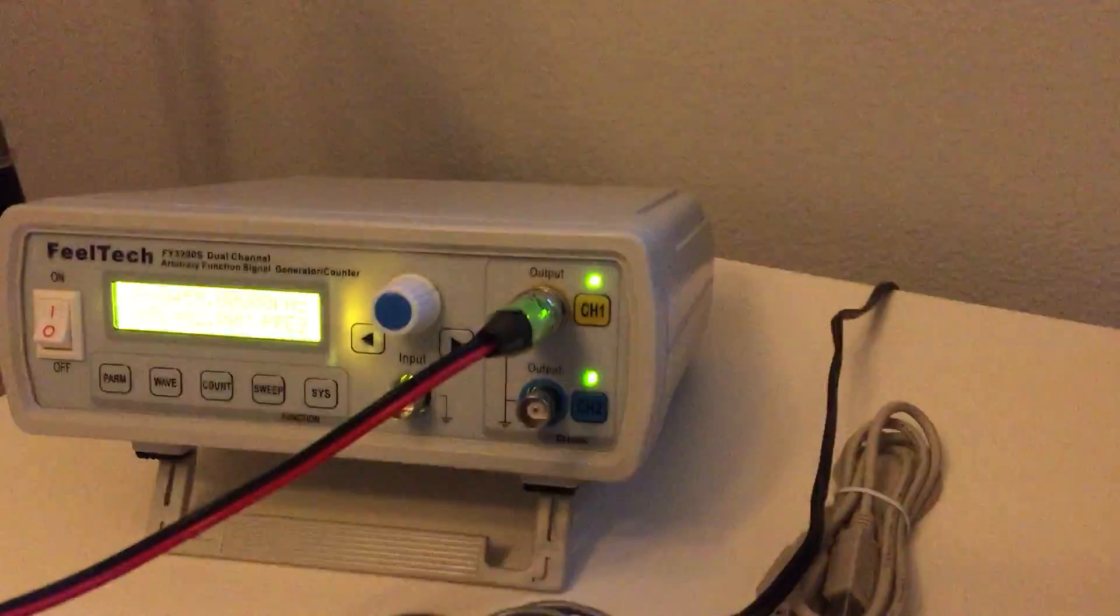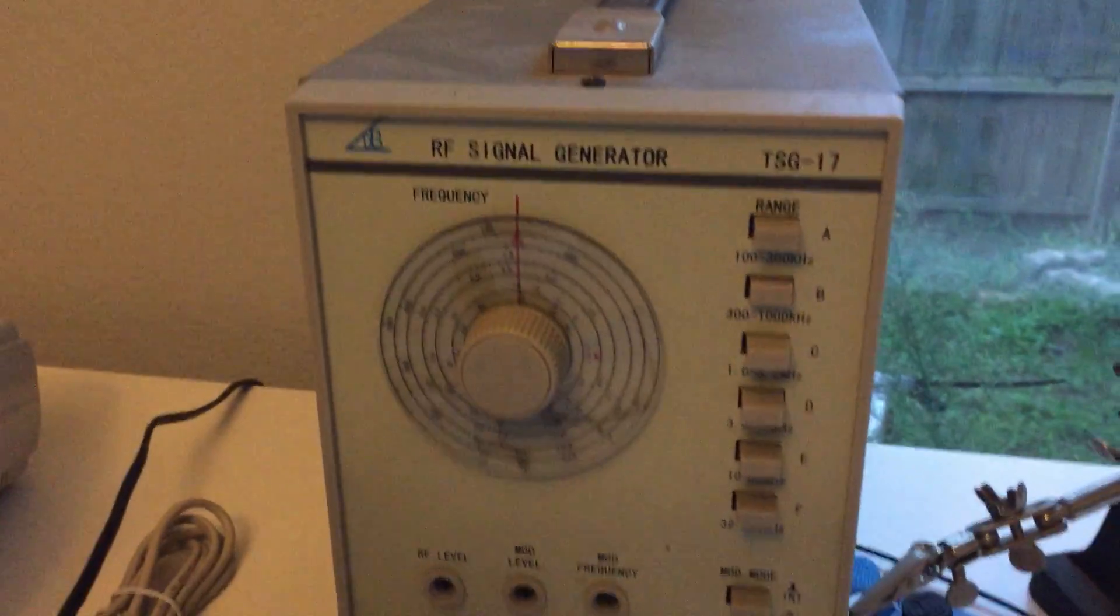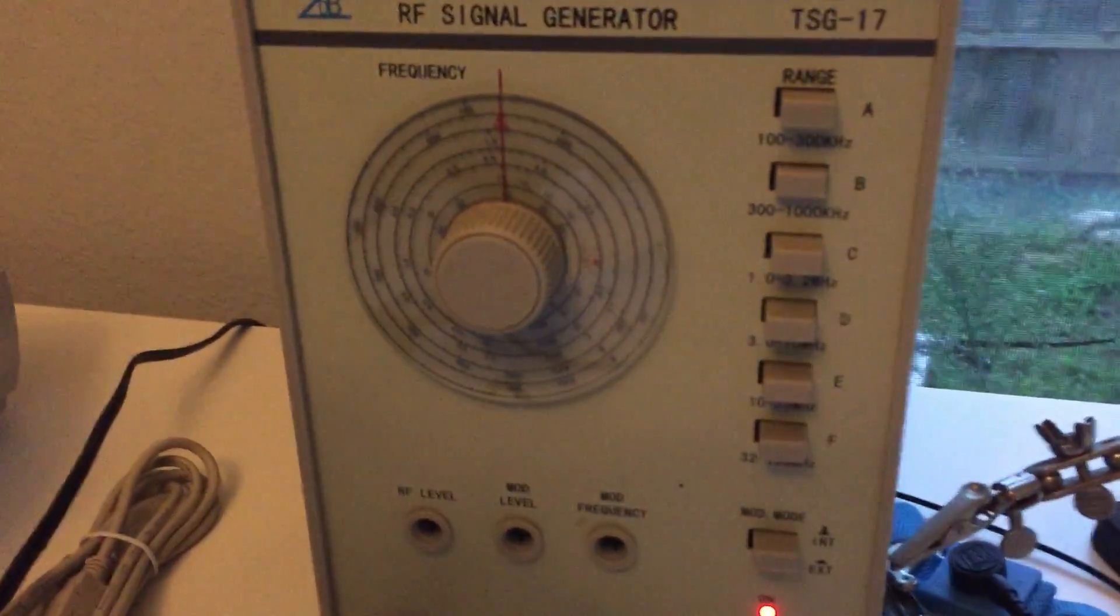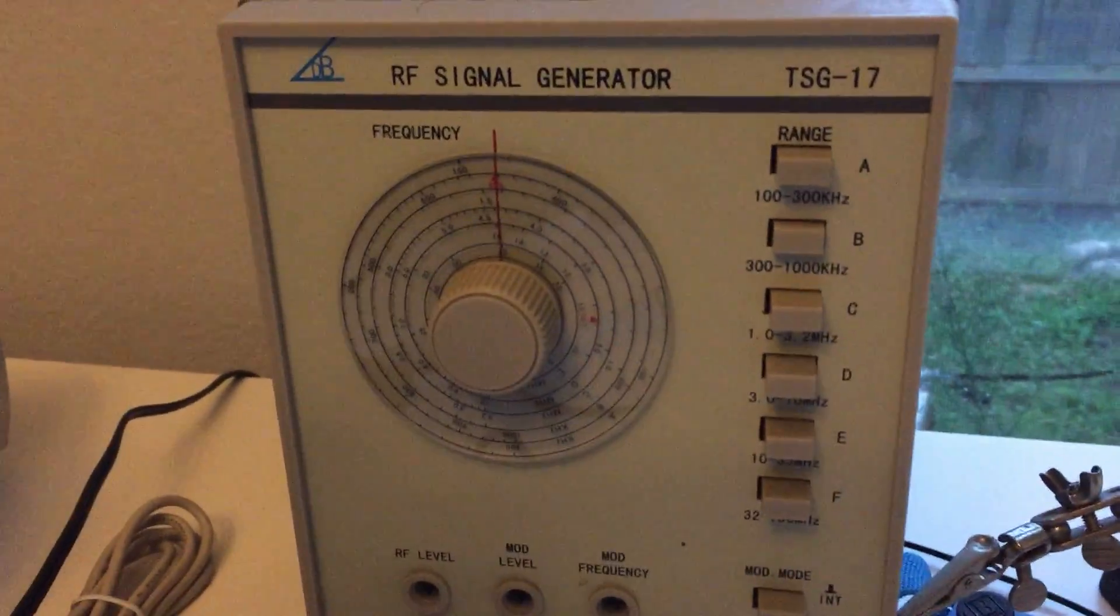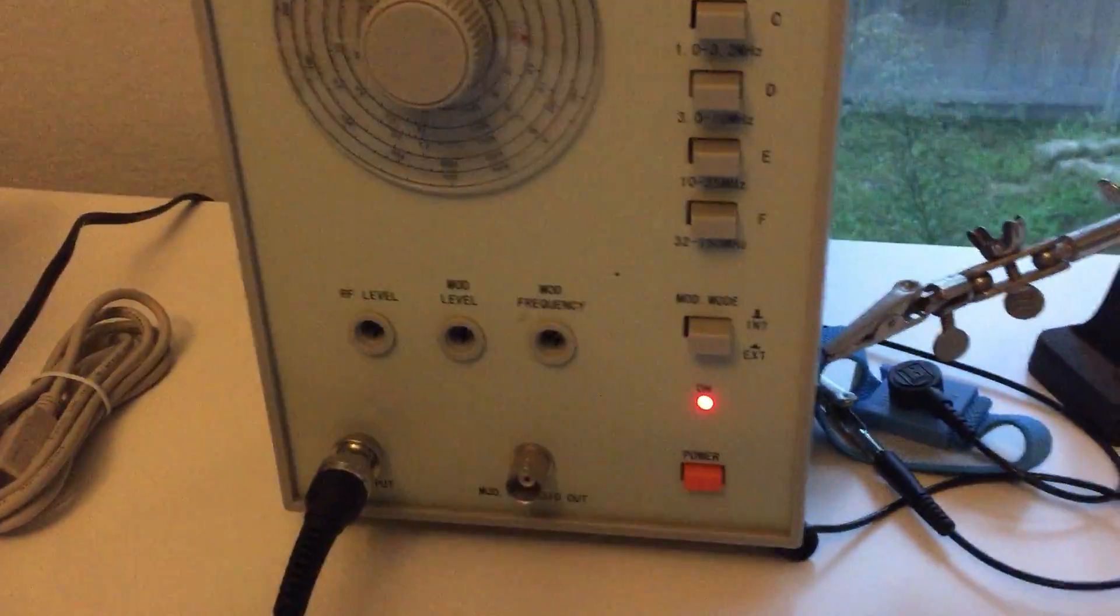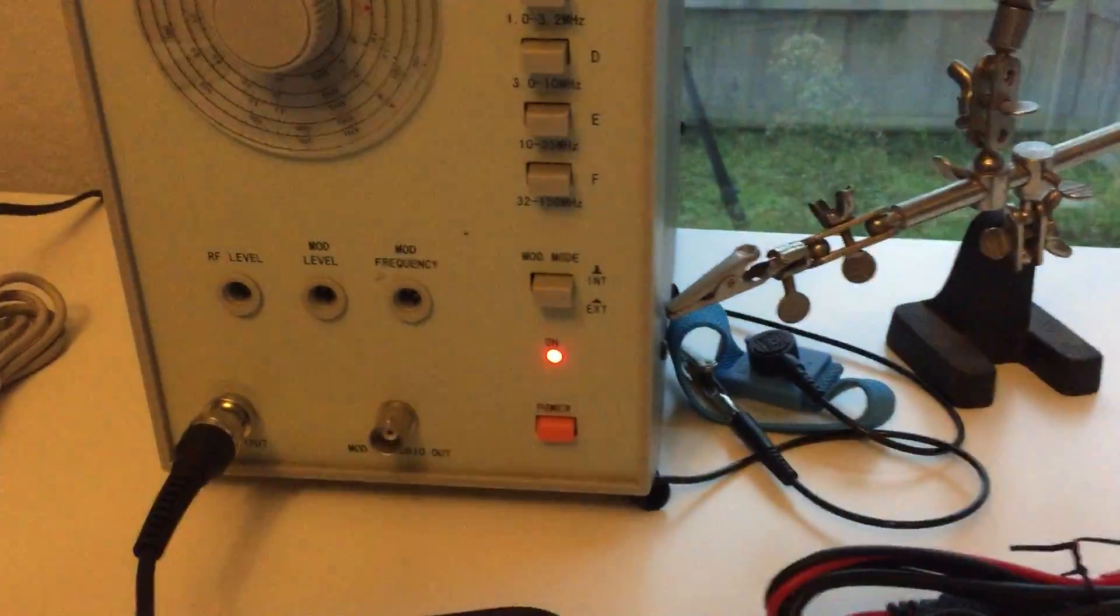This is connected into channel 2 of my oscilloscope. I also have an actual RF signal generator at the same exact frequency, and this is an amplitude modulated signal that's being generated. I know that it works.